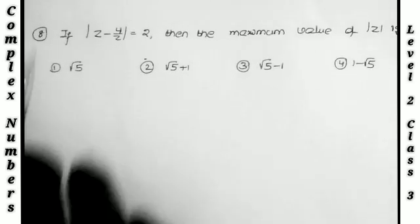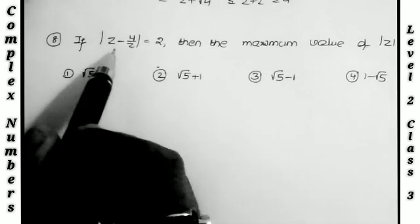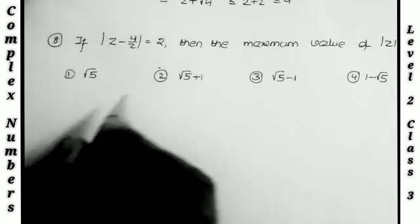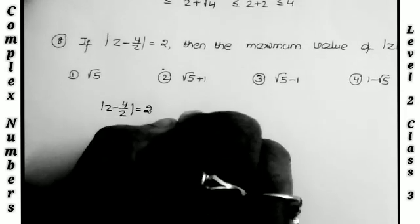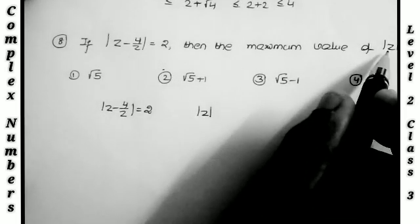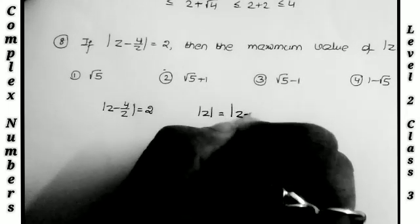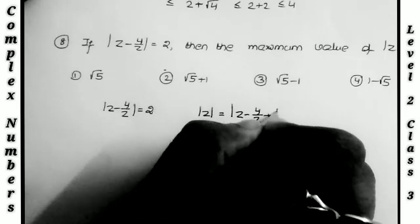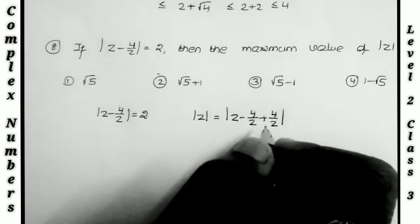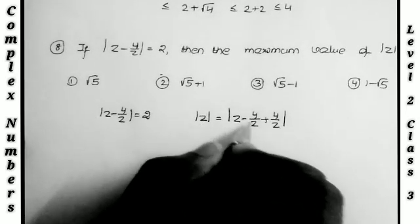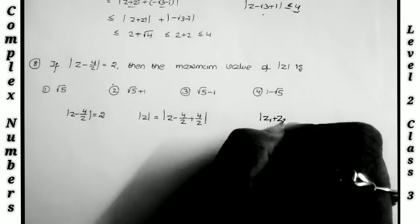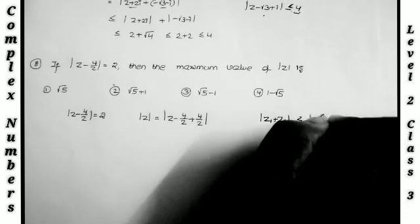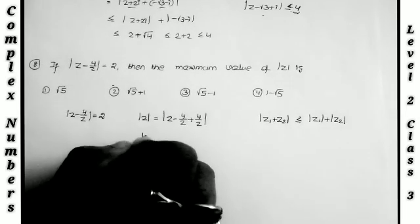The first problem: if |z - 4/z| = 2, then what is the maximum value of |z|? The given condition is |z - 4/z| = 2, and we want to find the maximum value of |z|. I rewrite |z| as |z - 4/z + 4/z|, adding and subtracting 4/z. Now I apply the formula |z1 + z2| ≤ |z1| + |z2|.